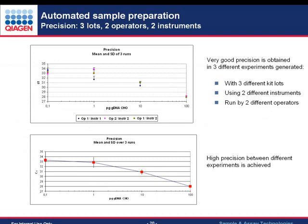Precision was assessed using three lots of the kit, two operators, and two KAYA Symphony instruments. Results from the three independent experiments are very close together, even at 100 picogram, 10 picogram, and 1 picogram. At 0.1 picogram we enter saturation but signals can still be detected. The average and standard deviations between the three experiments remain low.